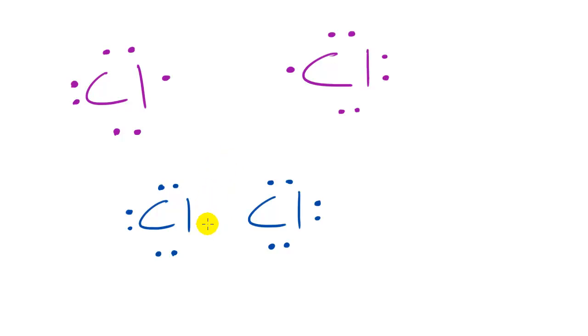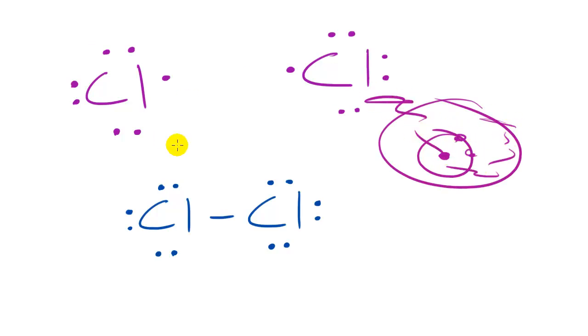However, more typically people use, instead of those two dots, they typically use a dash instead. So, this is actually a whole lot easier than drawing that Bohr model with chlorine and all the energy levels. This Lewis dot formula is a whole lot easier. So, that's what I'm going to be using from now on.